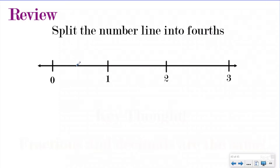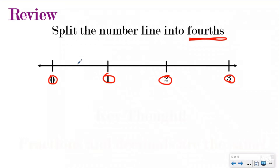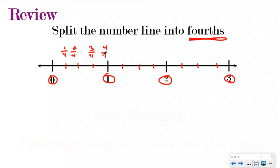We remember all the way back to when we were in third grade that we can split number lines into fractions. So here I have three wholes, and I want to split these wholes into fourths. That means each whole needs to be split into four equal pieces. And so I'm going to split each of them into four equal pieces. If I labeled them as mixed numbers or fractions, in between zero and one would be one-fourth, two-fourths or one-half, three-fourths. We have one whole, which would just be four-fourths.